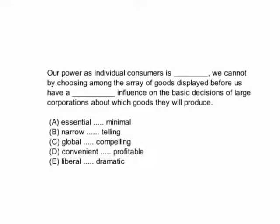Check this sentence out: 'Our power as individual consumers is blank. We cannot, by choosing among the array of goods displayed before us, have a blank influence on the basic decisions of large corporations about which goods they will produce.' Terrible sentence. But it's their test, so they can get away with it. Some students get bogged down trying to take in the whole sentence. It's really helpful to focus on the subject and verbs: 'Our power is something' — then it says 'We cannot.' If I said 'My power was blah blah — I can't,' does it sound like I have a lot of power? No. There's something limiting about that.